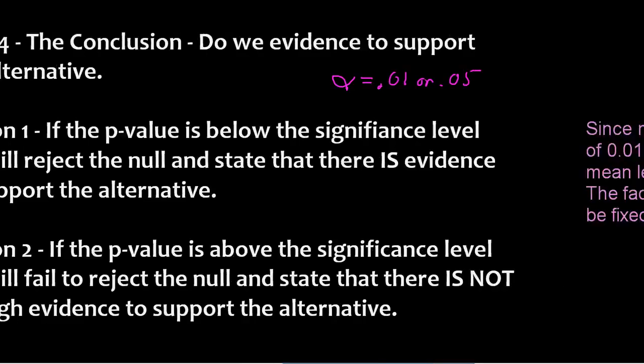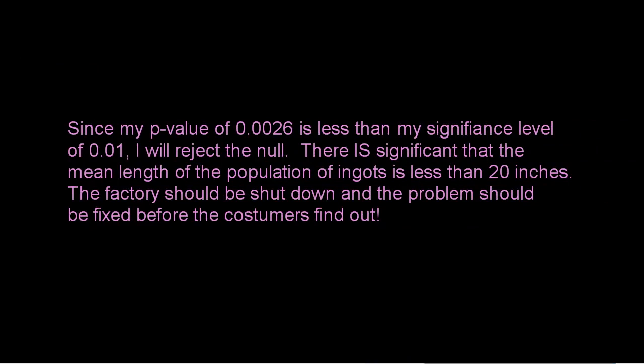But that's not what happened in our example. So here's what happened in our example. Since my p-value of 0.0026 is less than my significance level of 0.01, I will reject the null. This is significant. There is significant evidence that the mean length of the population of ingots is less than 20 inches. The factory should be shut down and the problem should be fixed before the customers find out and get all mad. So again, our sample came back at 19.914. That could have been for two reasons. One, hey, samples vary. It just happens. Or two, our sample was so significantly low that we're going to conclude that the only possible explanation is that the true mean is lower than 20. And in that case, we should stop working. We should shut down the machines, fix them, buy new ones, do something, because that is a major problem.